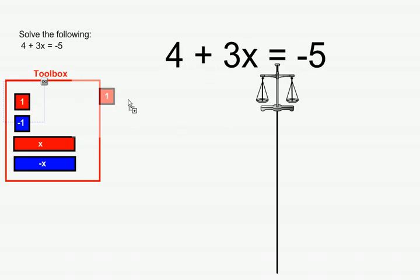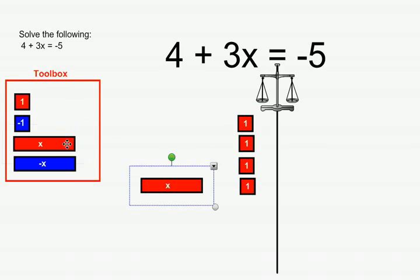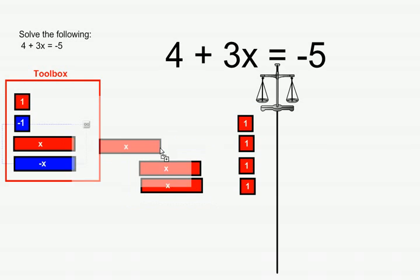To represent the 4, we're going to use four red unit tiles and place them on the left side of the vertical line. To represent 3x, we're going to place three x tiles on the left side of the vertical line.